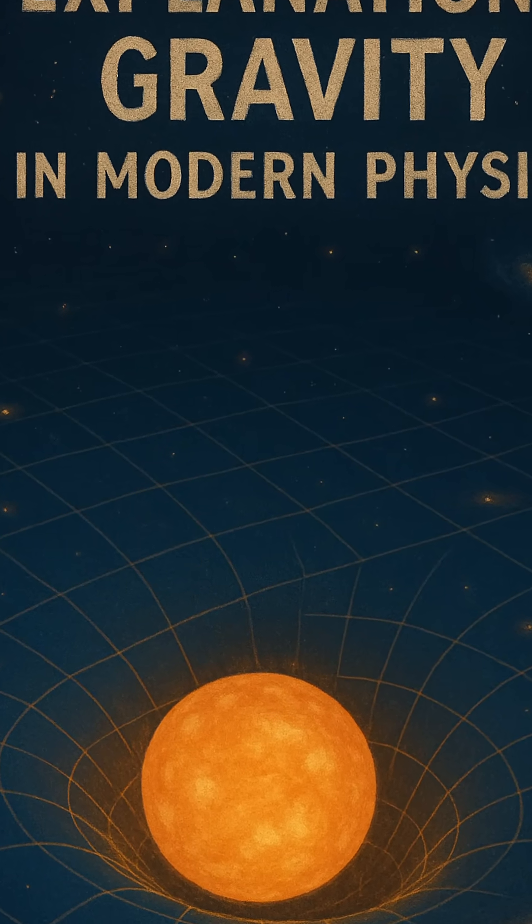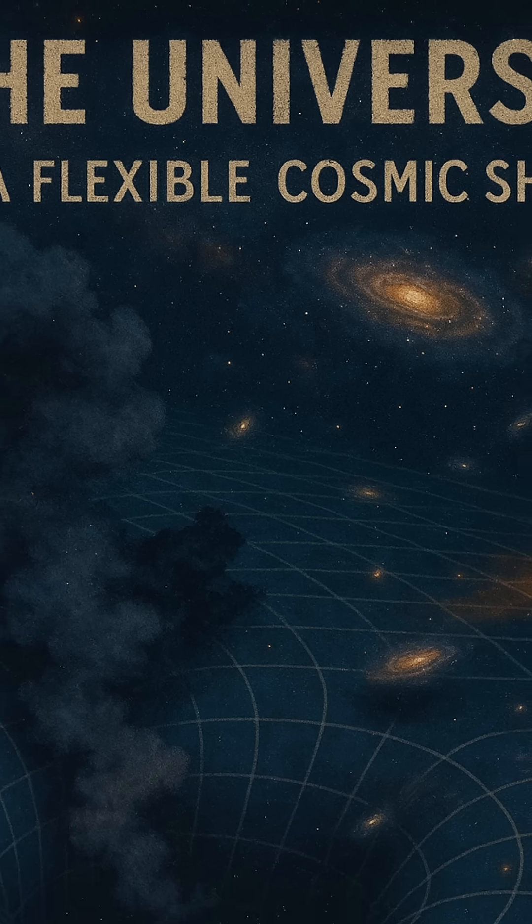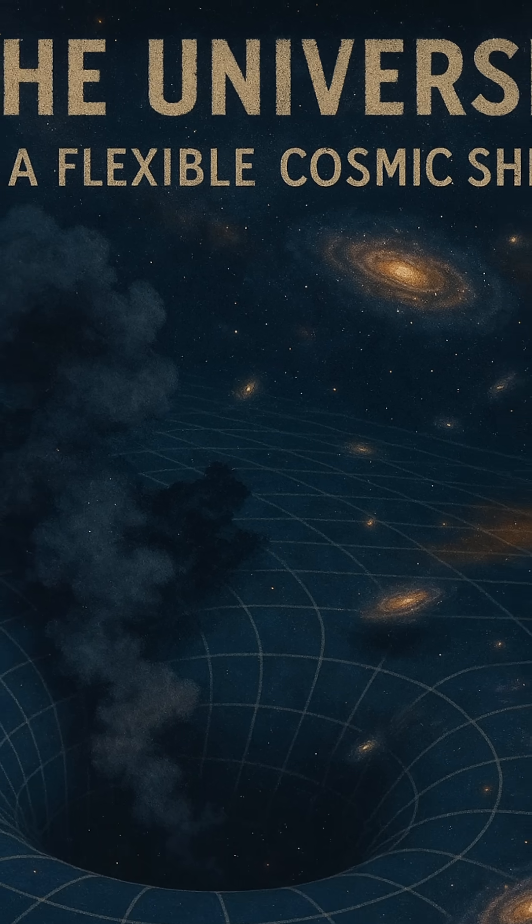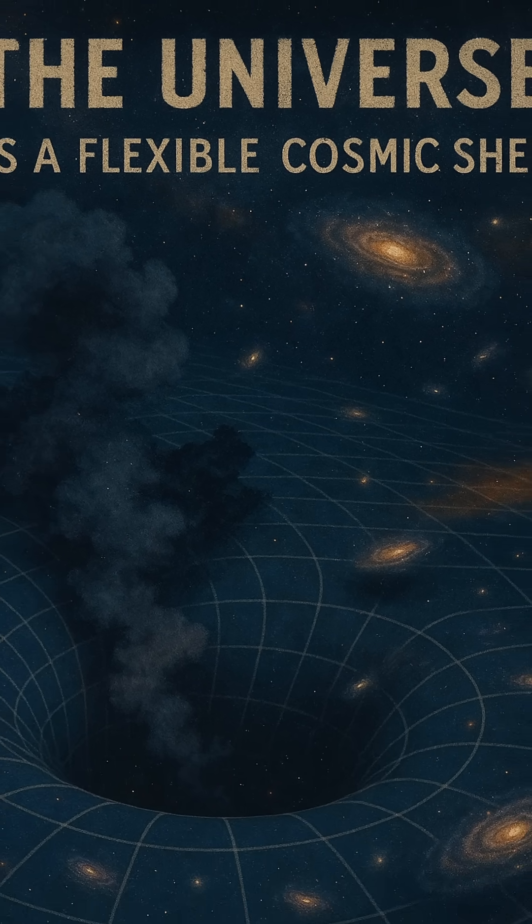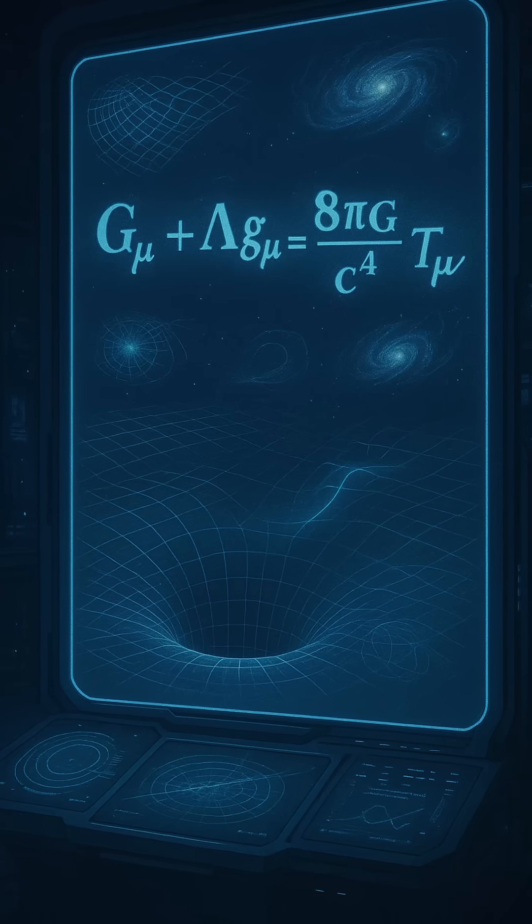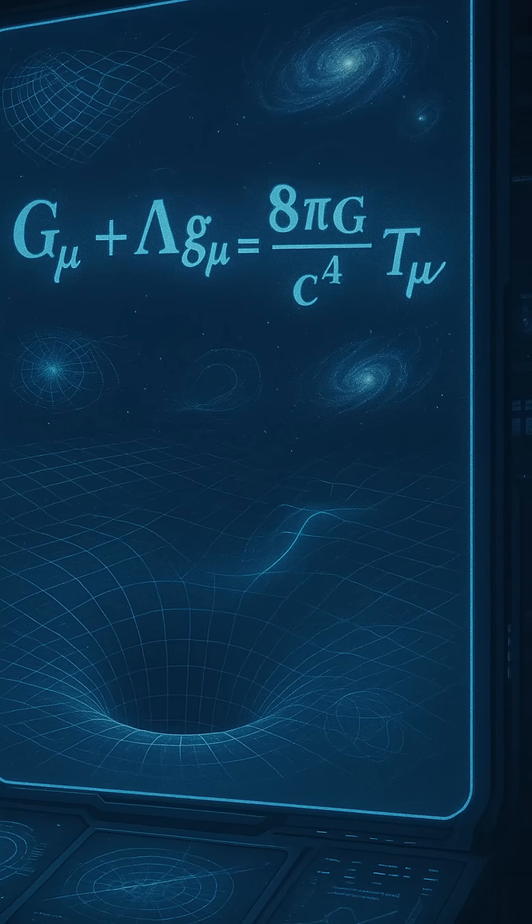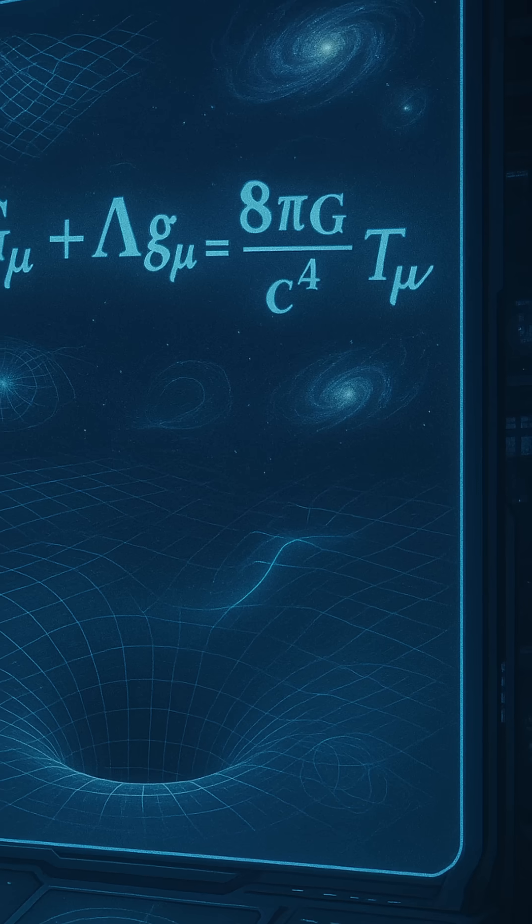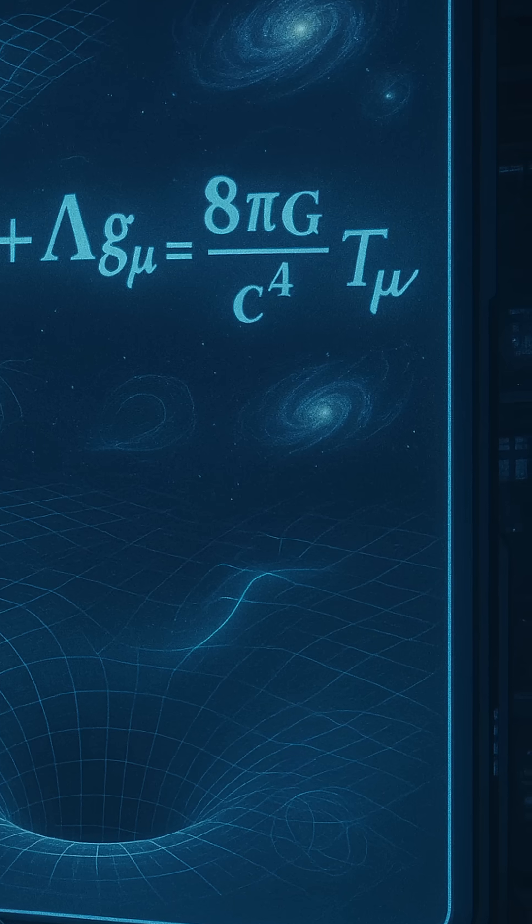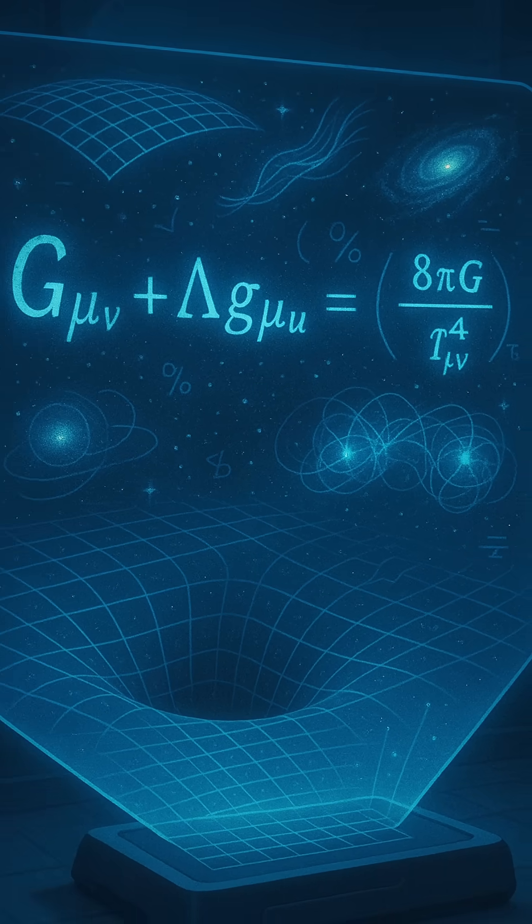The Einstein field equation is more than a scientific formula. It's a blueprint of reality. It transformed our understanding of gravity from a mysterious force into a natural consequence of geometry. It revealed that the universe is not a static backdrop, but a dynamic, ever-shifting arena shaped by energy and matter. Through this equation, we discovered that space and time are woven together, alive with motion and form and fundamentally connected to everything that exists.